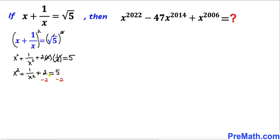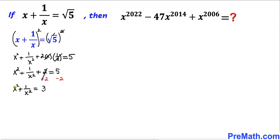Now let's subtract 2 from both sides. That gives us x² + 1/x² = 3.